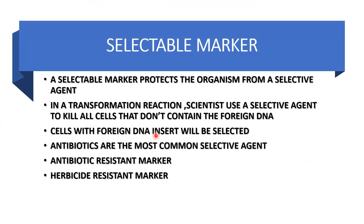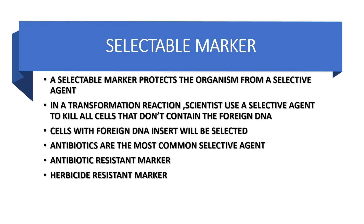So when, along with our target gene, we have inserted the antibiotic resistant gene and we are growing that cell or tissue in the presence of that antibiotic, only the cells which have the antibiotic resistant gene will survive. All other cells will be killed. So we can select the cells which have survived in the presence of that antibiotic. Both antibiotic resistant markers and herbicide resistant markers can be used.